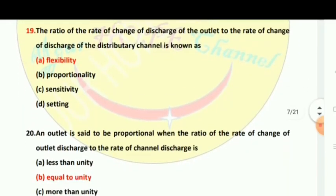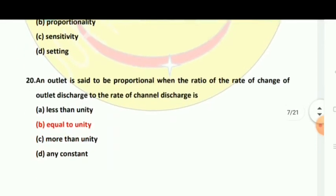Question 19: The ratio of the rate of change of discharge of the outlet to the rate of change of discharge of the distributary channel is known as flexibility. Question 20: An outlet is said to be proportional when the ratio of the rate of change of outlet discharge to the rate of change of channel discharge is equal to unity. We will cover formulas, examples for exams, and study materials in our channel.